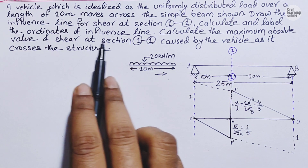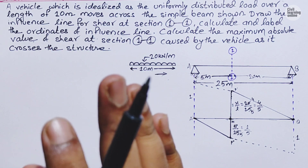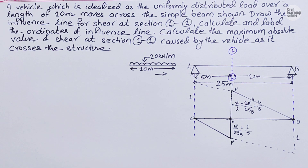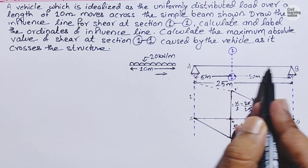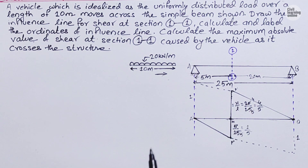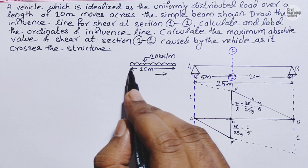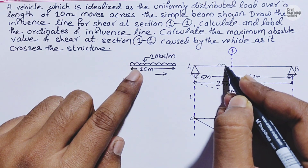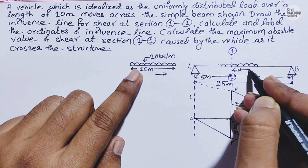Now for the second question — calculating the maximum absolute value of shear at section 11. The shear will be maximum when the CG of the UDL coincides with the CG of the beam at section 11. So we must place the UDL on the beam such that the CG of the load coincides with the CG of the beam. Suppose the load has moved from left to right and a distance X of the 10-meter load has crossed section 11.